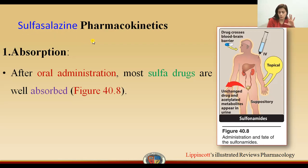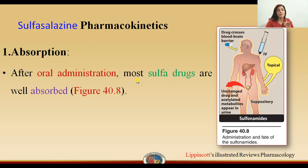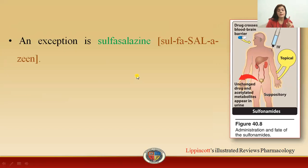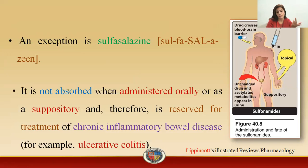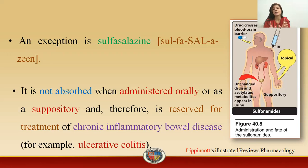Most sulfonamides are absorbed well, except one drug — sulfasalazine. Sulfasalazine is the exception; it is a drug that is not absorbed well, so it remains in the intestine. Since it is not getting absorbed into the bloodstream, this means it can be used for intestinal infections and for the treatment of chronic inflammatory bowel disease.